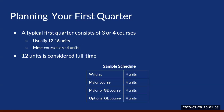You will be receiving personalized course recommendations in the coming weeks, but here's a sample schedule to help understand what classes to plan for. The first will be a college writing course. Second, we will recommend a major course. Third, another major or GE course. And fourth, another optional GE course, depending on how many units you want to take in your first quarter.